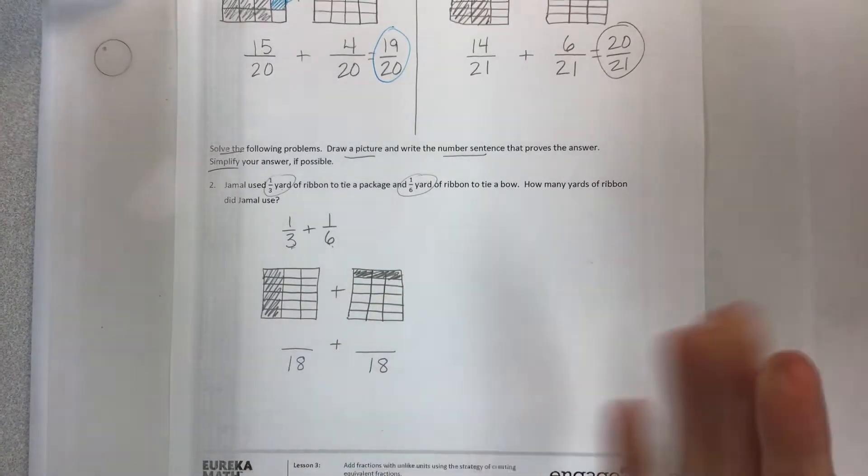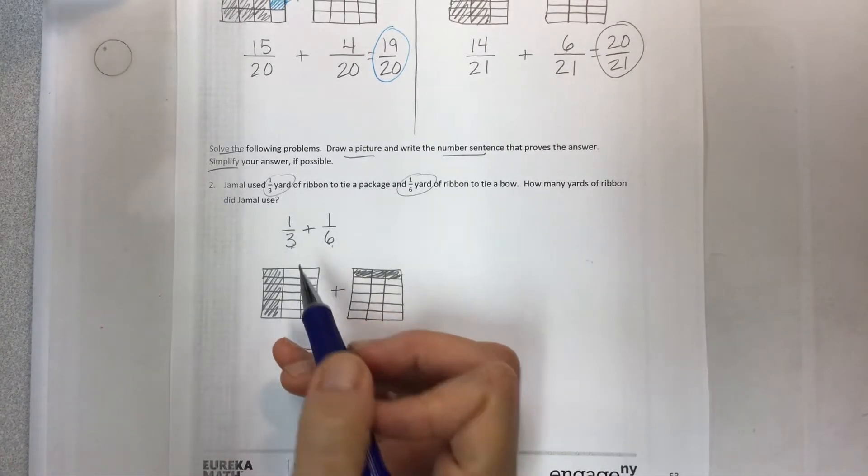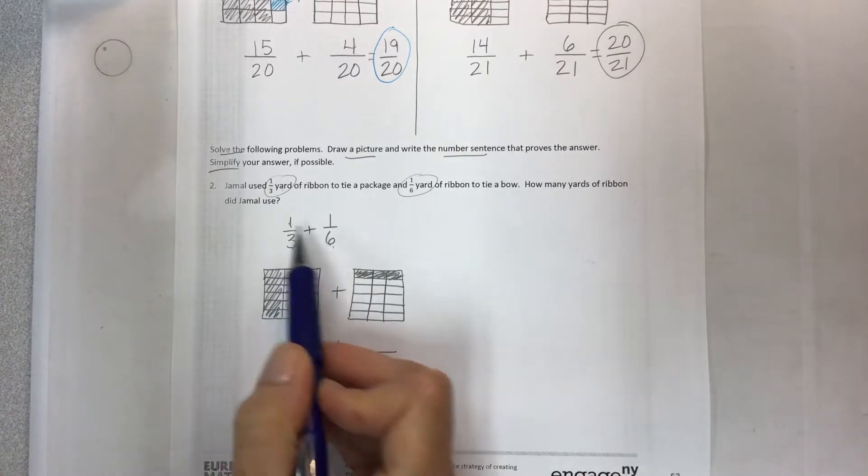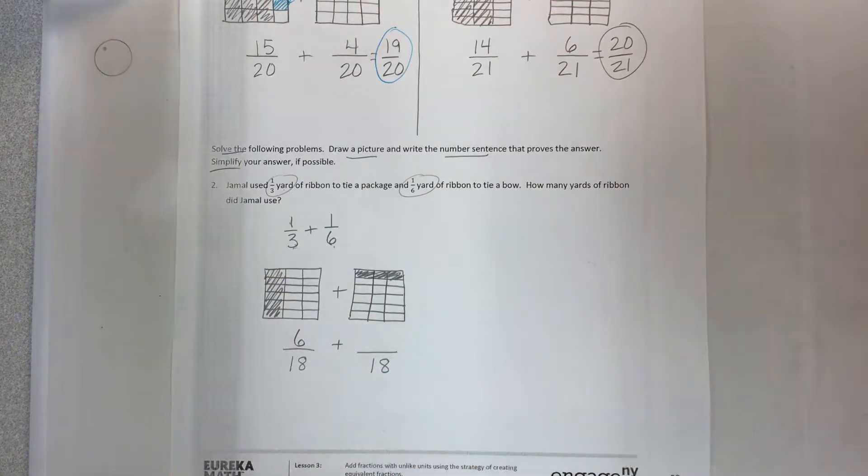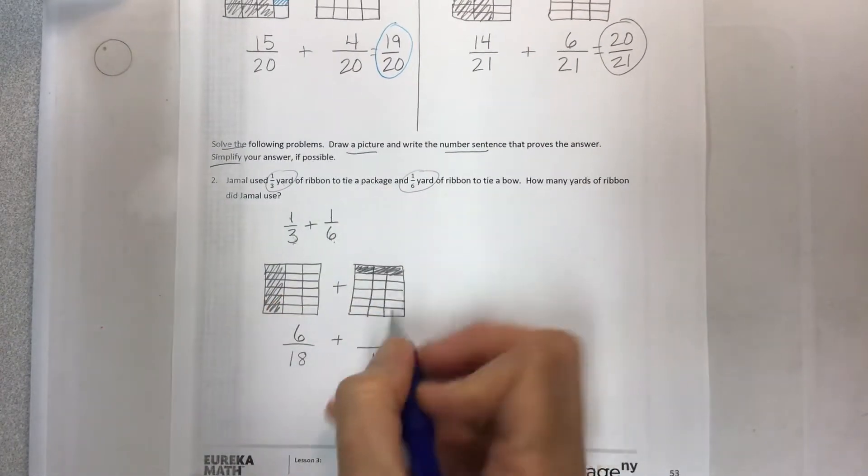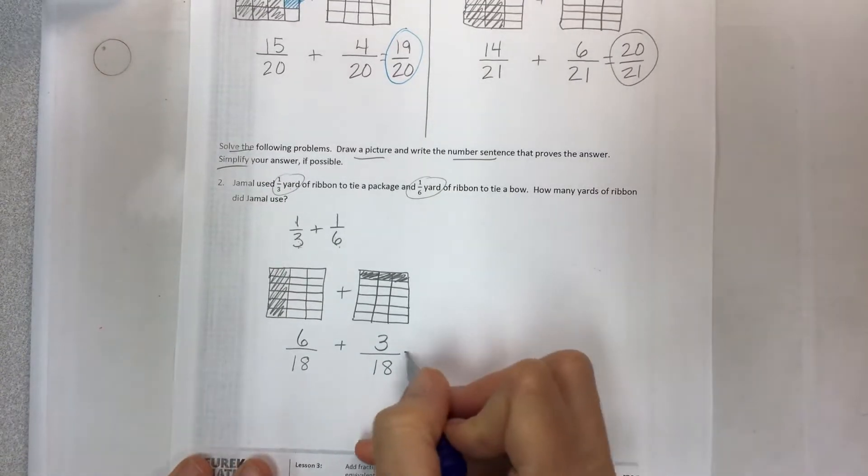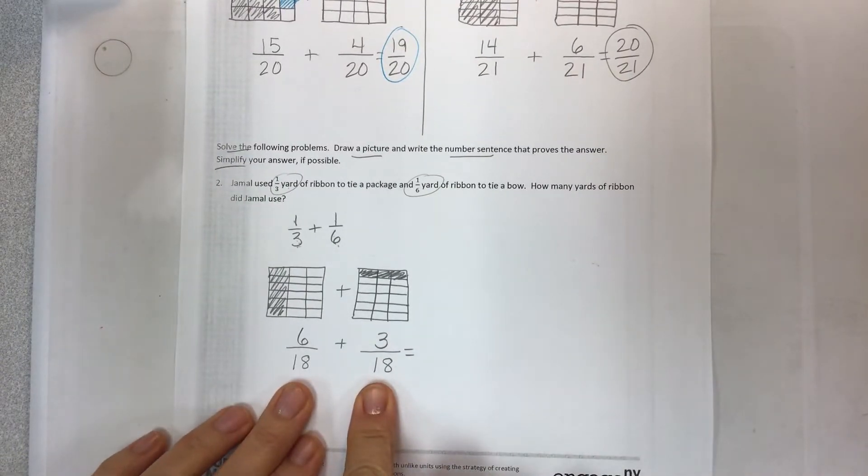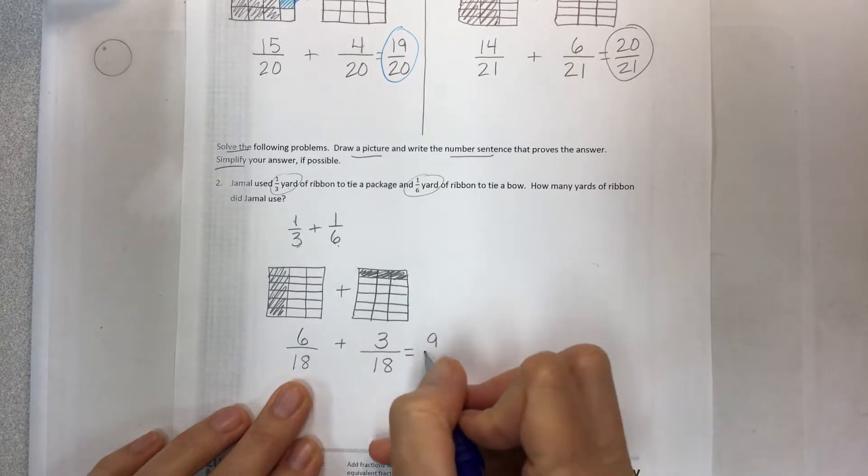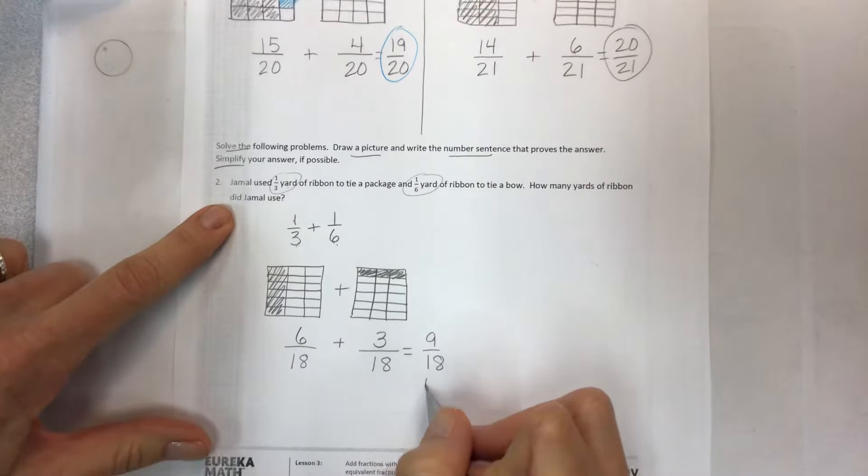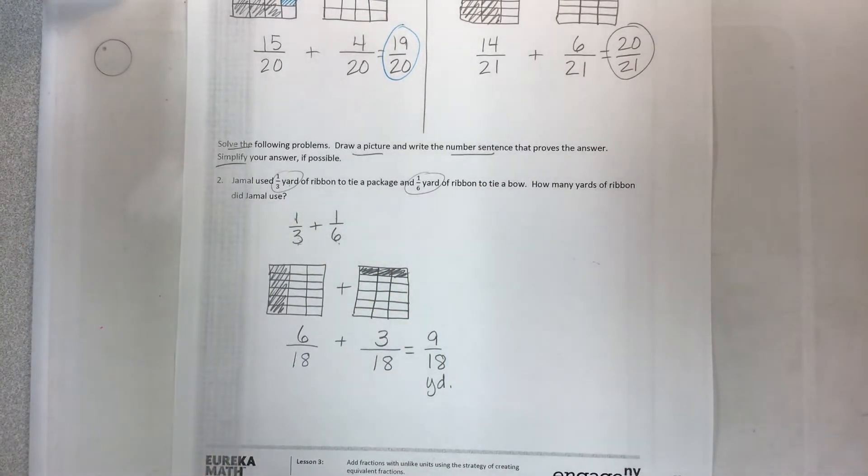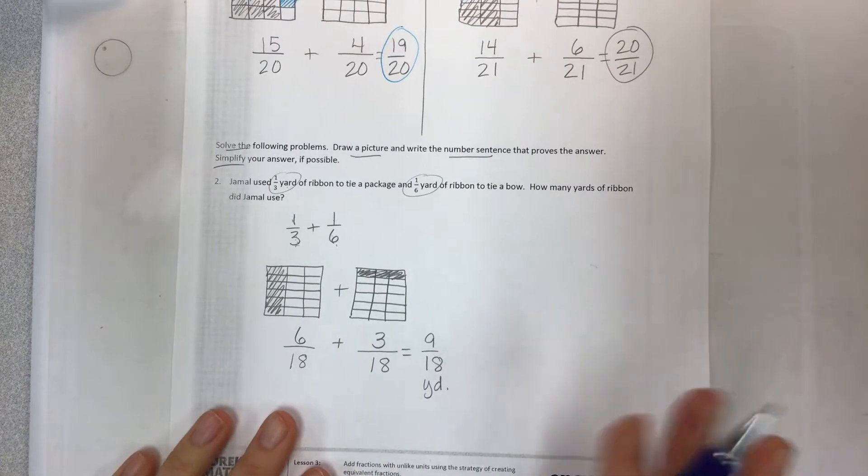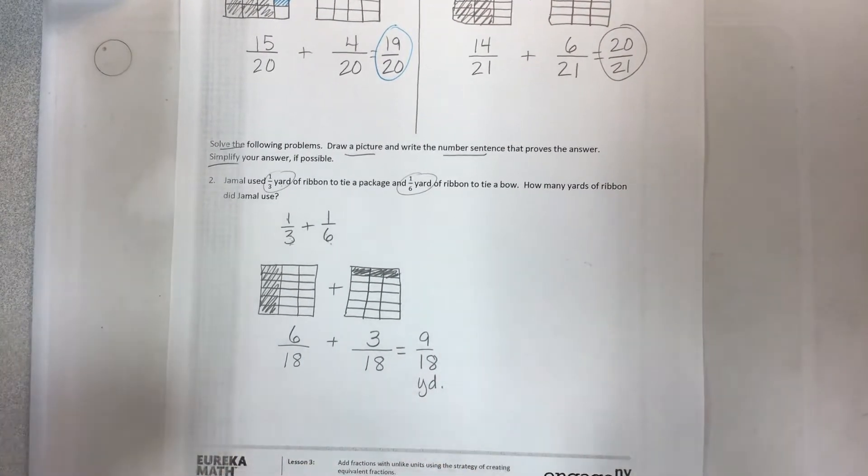Make thirds over here so that we now have a total of three times six, eighteen pieces in both. We have equivalent fractions and we can now add. If I had 1/3 but I laid six over them, then it's basically one times six for six pieces. And if I had one out of six pieces and I now turned it into thirds, three times one is three. So I have a total of six plus three which is nine, nine eighteenths yard. Our last instruction is to simplify if possible.